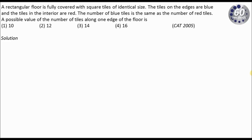This is Prakash from 60 Seconds. Today we will look at a question from CAC 2005. A 10-degree floor is fully covered with square tiles of identical size. The tiles on the edges are blue and the tiles in the interior are red. The number of blue tiles is the same as the number of red tiles. What can be the possible number of tiles along one of the edges of the floor?